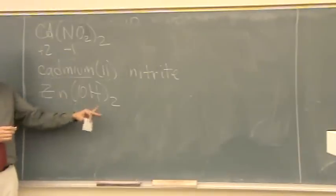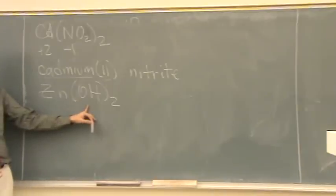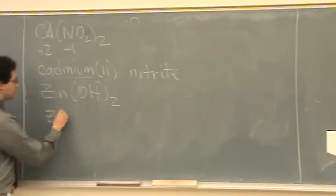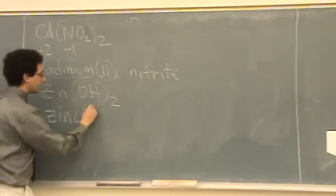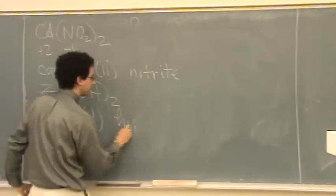Zn(OH)2. It's ionic again, got a transition metal. What's the name of OH? Hydroxide. So we'll go, again, online zinc is one of those that you don't necessarily need to put the 2 on, but we're always going to. And then space, hydroxide.